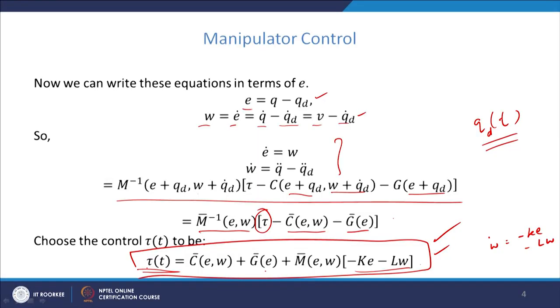This lecture shows how we can control certain dynamical systems for a particular goal. Lyapunov theory can be used for controlling a robot manipulator to perform a particular task, which we will see in coming lectures.